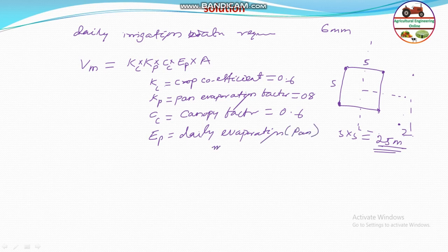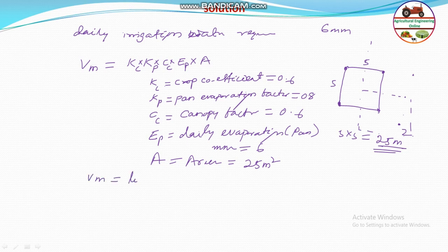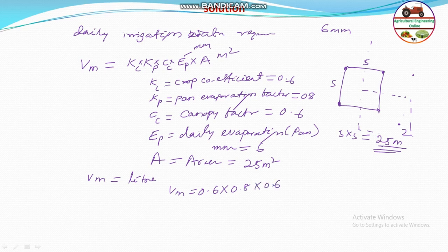The area A for a single orchard is 25 square meters. Keeping Ep in millimeters and A in square meters gives units of millimeter × square meter = 10⁻³ m³ = 1 liter. So Vm = 0.6 × 0.8 × 0.6 × 6mm × 25 = 43.2 liters. This is the daily water requirement per orchard.